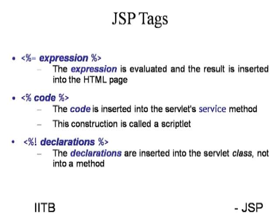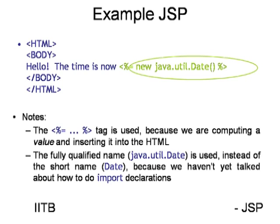Let me show you an example of the expression tag. Here is a simple HTML page where I have displayed the current date. Java.util.Date is a predefined method available in Java under the utility package. The value returned by the date method is assigned to the page. Since this is a variable assignment, I am using the expression tag.